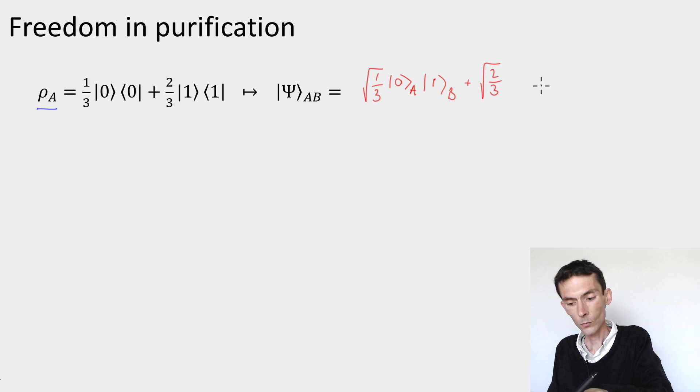Plus √(2/3)|1⟩, and then let's have a |2⟩ for B. So this |1⟩ and |2⟩ that I introduced here, this is an arbitrary basis for an arbitrary system B that I'm creating in order to define the purification.